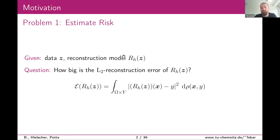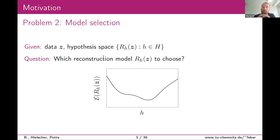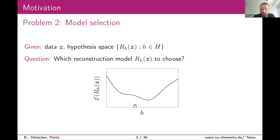A very similar problem arises when you don't have just one model but a whole family of models — a hypothesis space indexed by some parameter. You can ask which model is better for approximating your data. If you think of regularization schemes, there are often parameters involved, and you can ask how to choose these parameters such that your reconstruction fits the data best. This boils down to approximating the reconstruction error from the data alone.